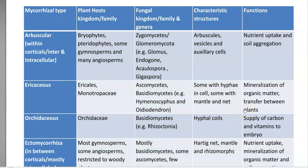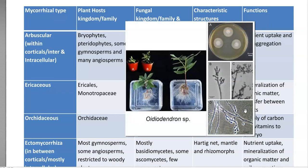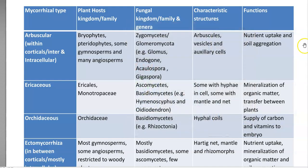The next one is ericaceous mycorrhiza, which commonly belongs to plants in the order Ericales and the family Monotropaceae. The fungal partner mainly belongs to Ascomycetes and Basidiomycetes; classical examples under Basidiomycetes include Hymenoscyphus and Oidiodendron. Characteristic structures include hyphae formation within the cell and sometimes a mantle with a net-like appearance resulting from hyphal growth. Their function includes nutrient supply and mineralization of organic matter.